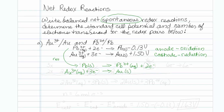Now I have to balance the electrons in versus the electrons out. The top reaction generates two electrons, and the bottom reaction requires three electrons. So I'm going to take the top reaction and multiply it by three: three lead solids, three lead two pluses, and six electrons. The bottom one I'll multiply by two: two gold three plus, six electrons, and two gold solids.